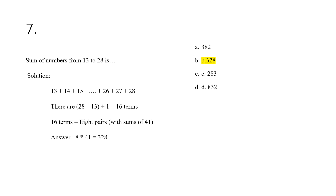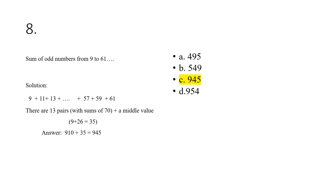For number eight, the sum of odd numbers from 9 to 61. We account for 13 pairs with sums of 70, plus a middle value. The middle value is 9 plus 26, which equals 35. Our answer is 13 pairs times 70, which is 910, plus the middle term of 35, giving a total of 945.